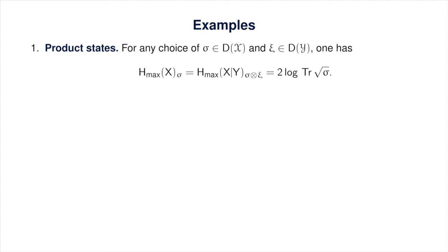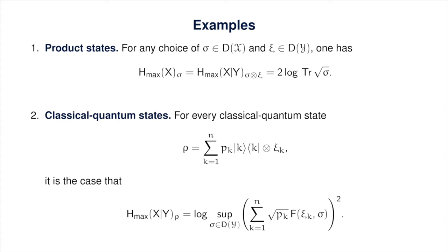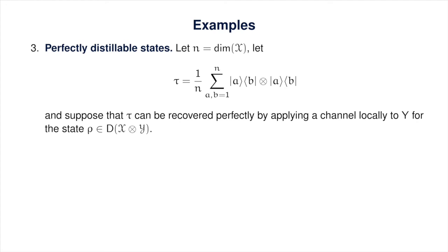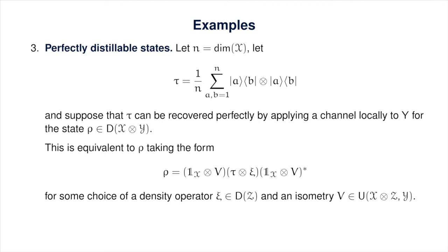For classical-quantum states, we have the formula for the conditional max entropy shown here. For a third and final example, we may consider perfectly distillable states: let tau be the canonical maximally entangled state on two copies of register x, and suppose rho is a state of the pair x, y for which tau can be perfectly obtained by applying some channel locally to y. Just like the conditional min entropy and conditional quantum entropy, the conditional max entropy of any such state is negative log of n, where n is the dimension of x.